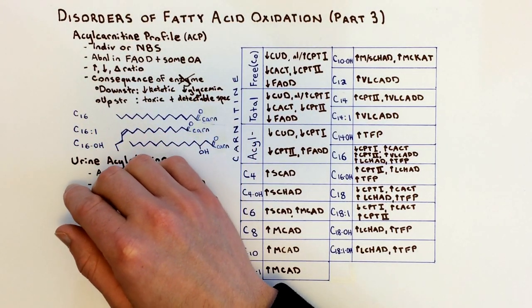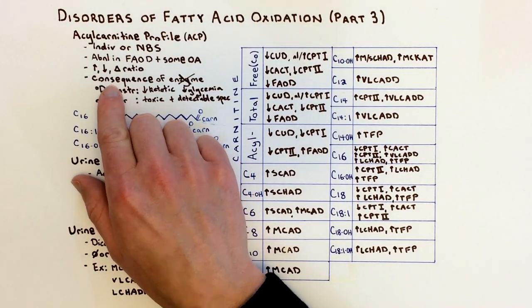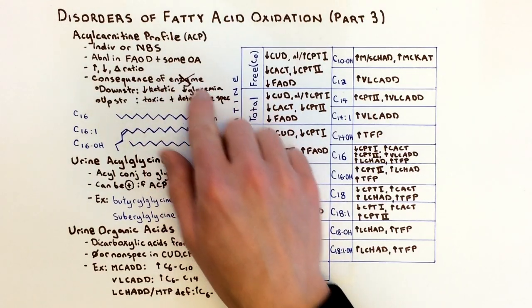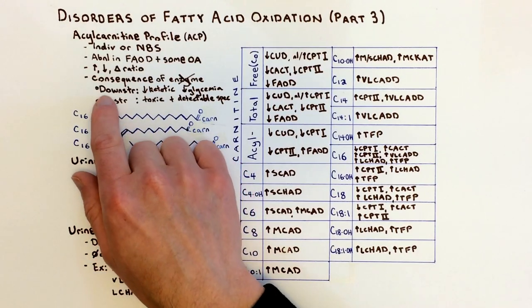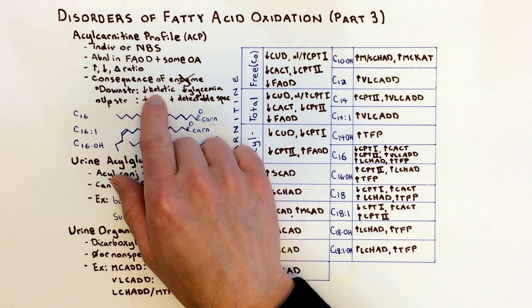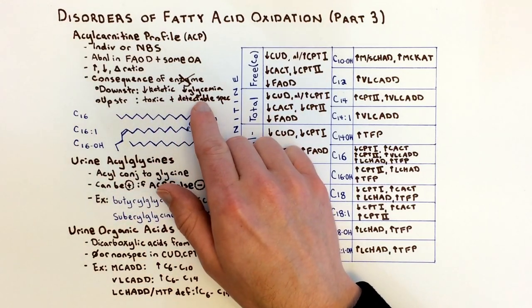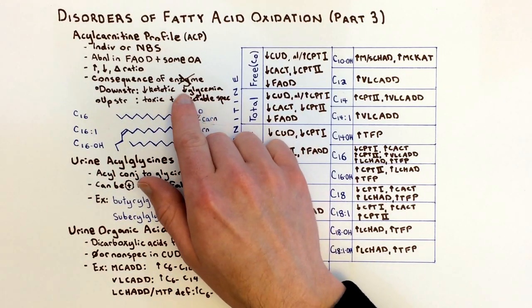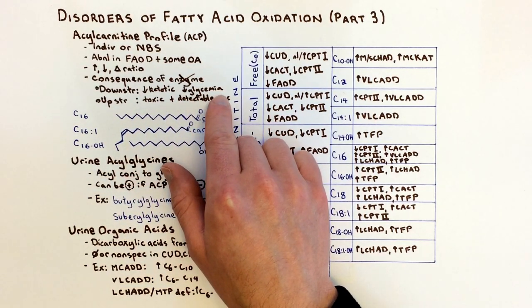When thinking about which species might be increased, decreased, or have a different ratio, consider the consequence of a knocked-out enzyme. In the fatty acid oxidation disorders, the downstream effects are that you're not making ketones as well, so you have a hypoketotic state, and you're not making glucose or energy, so you have hypoglycemia. Hypoketotic hypoglycemia is indeed one of the key features of fatty acid oxidation disorders.